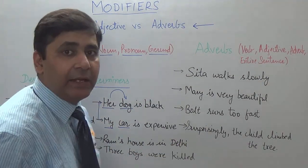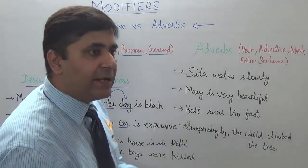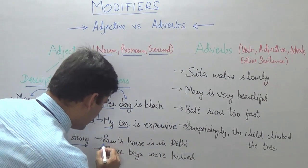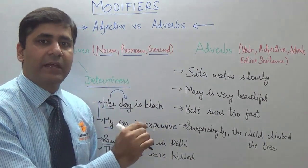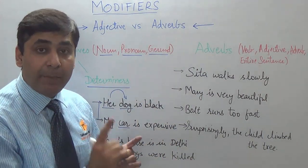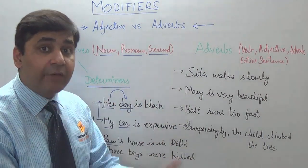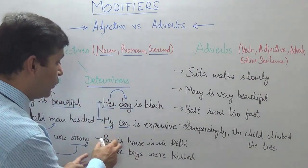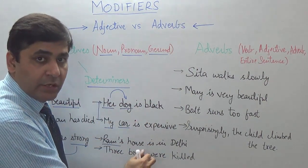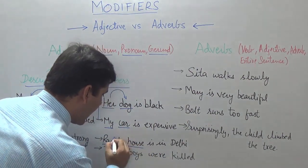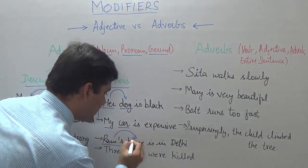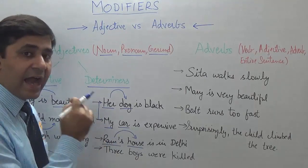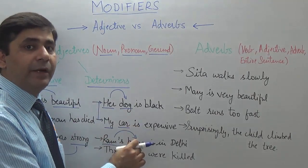'Ram's house is in Delhi.' Many times students consider 'Ram's' as a noun, but remember this is never a noun. Rather it is telling you possession on 'house' — giving additional information in terms of ownership. So 'Ram's' becomes a possessive determiner.